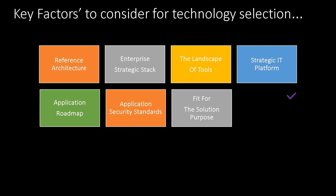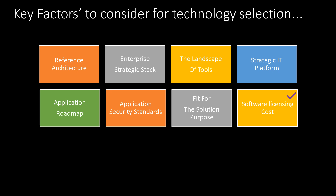The next factor is about software licensing, which could directly influence your development cost. Leveraging an existing enterprise license will help save development and distribution licensing costs. Simply following a trending technology and obtaining a new license may not be a cost-effective decision in the longer run.